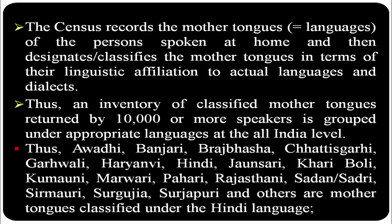An inventory of classified mother tongues returned by 10,000 or more speakers is grouped under appropriate languages at the all-India level. For example, Avadhi, Manjari, Brajbhasha, Chhattisgarhi, Garhwali, Haryanvi, Hindi, Jonsari, Khadiboli, Kumaoni, Marwari, Pahari, Rajasthani, Sadri, Sirmauri, Surgujiya, Surjapuri, and others are mother tongues classified under the Hindi language.